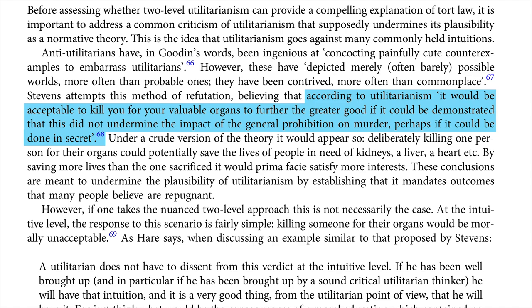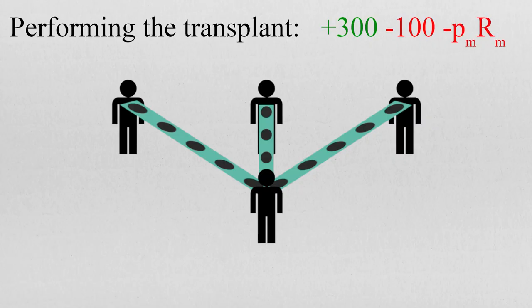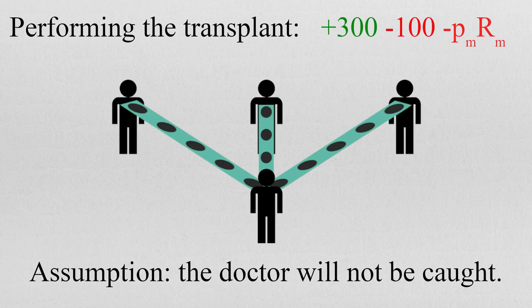Back to the difference between the trolley problem and the organ transplants. We have given what some might call a standard argument to differentiate the two examples. But there is a case that may generate some confusion: sometimes the organ transplant counterexample is given in a slightly different setting, where an extra assumption is added — that the doctor will not get caught and nobody will know of what transpired. This removes the rule erosion component from the eudaimonic calculus. We will call this specific setting the abstract organ transplant counterexample.